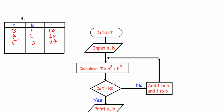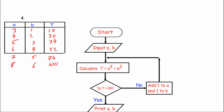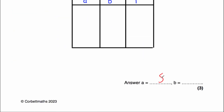Add one: A equals 6, B equals 4. T equals 6 squared plus 4 squared equals 36 plus 16 equals 52. Not bigger than 90 — add one: A equals 7, B equals 5. T equals 7 squared plus 5 squared equals 49 plus 25 equals 74. Not bigger than 90 — add one: A equals 8, B equals 6. T equals 8 squared plus 6 squared equals 64 plus 36 equals 100. Is 100 bigger than 90? Yes — so we print A and B. The answer is A equals 8 and B equals 6.